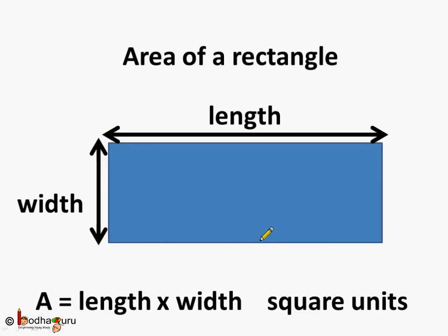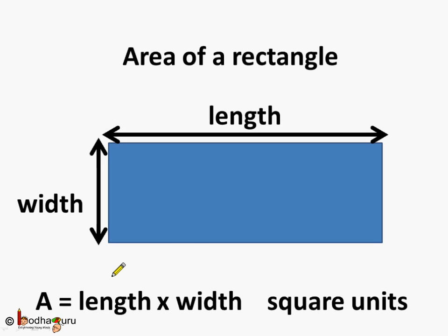So, this is a way to find the area of a rectangle. If you know the length and the width of a rectangle, you can find its area by multiplying the length and width. The area would be expressed in square units. If the sides are expressed in meters, the area would be square meters. If the sides are expressed in centimeters, the unit would be square centimeters for the area.